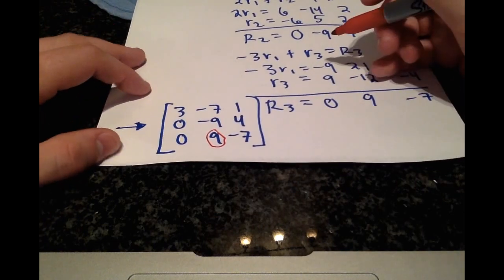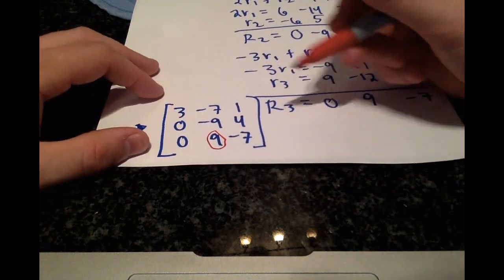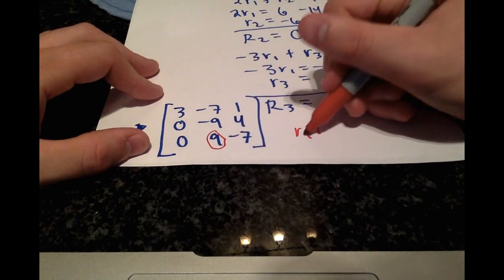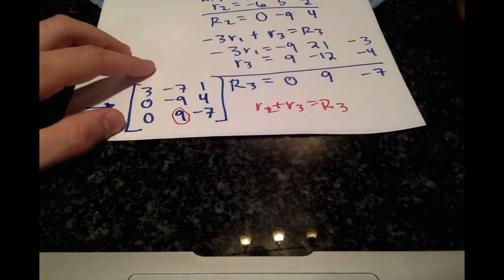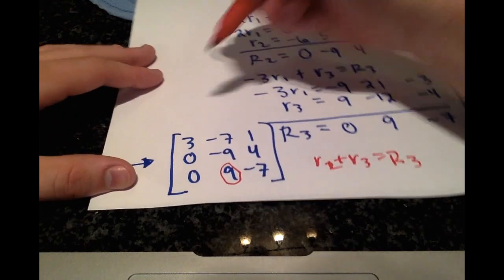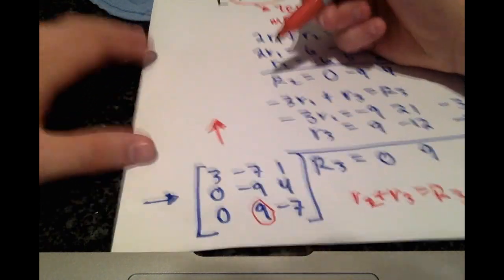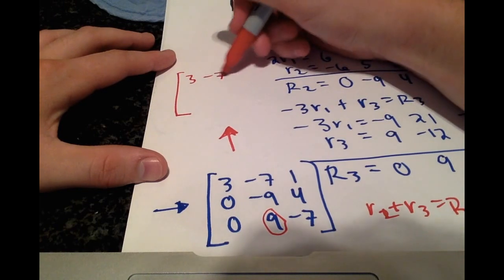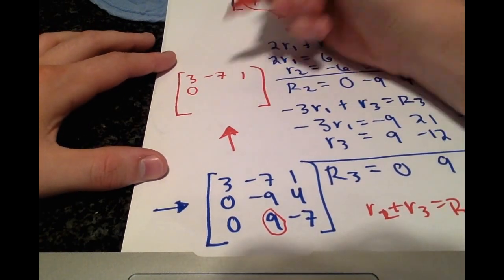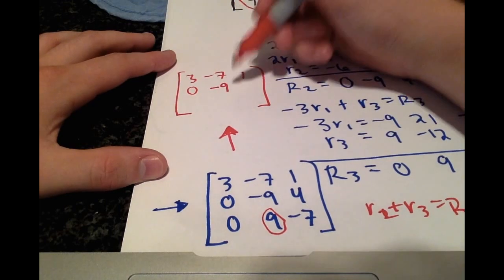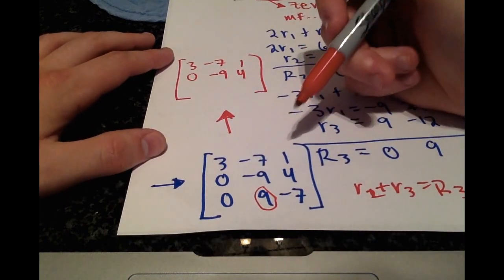And we can do that by just adding row 2 and row 3 to give us our new row 3. And once we do that, we'll get 3, negative 7, 1. Row 2 will be the same, 0, negative 9, 4. And when we add that, we'll get 0, 0, negative 3.